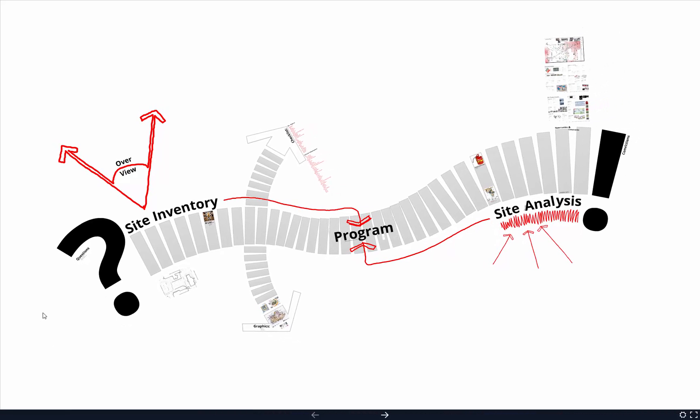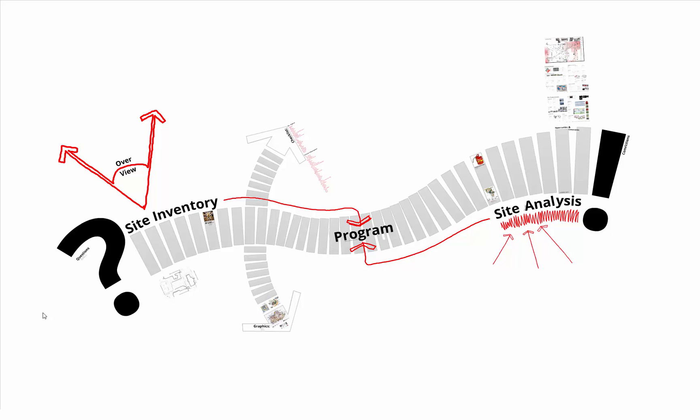Hi everyone. I mentioned yesterday in class that I would try to put something together on site analysis — that's what we're going to take a look at tomorrow in class. This presentation was designed for LAND 332, which is a planting studio you'll take a couple of years from now in the spring. What you're going to see here is probably more complex and complete than what we're expecting for Friday, and you don't have to create a super finished board — this is really working information for you.